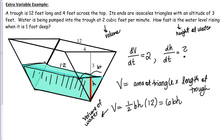One important step in our related rates process is to eliminate variables from the equation for which we don't know the rate of change, except for the one we're actually looking for. Looking at our equation V = 6BH: I know dV/dt, so V is fine. dH/dt is what I'm looking for, so I want to keep H. But what about B, the base? I don't have any information about the rate of change of the base of this triangle, so I need to eliminate that variable.